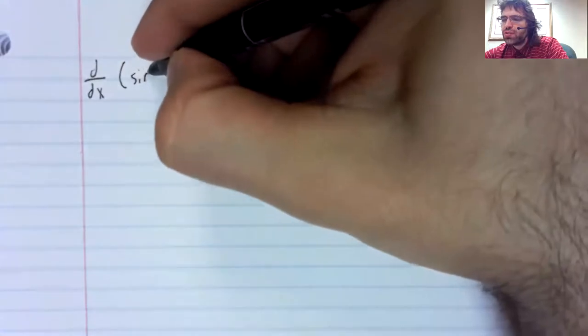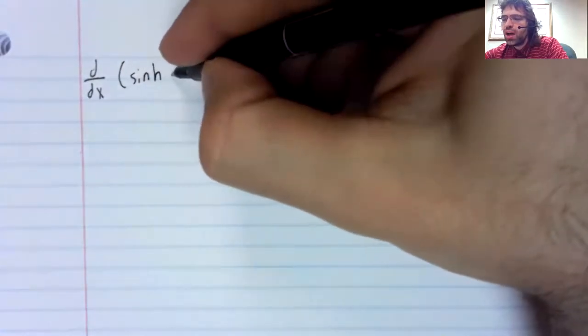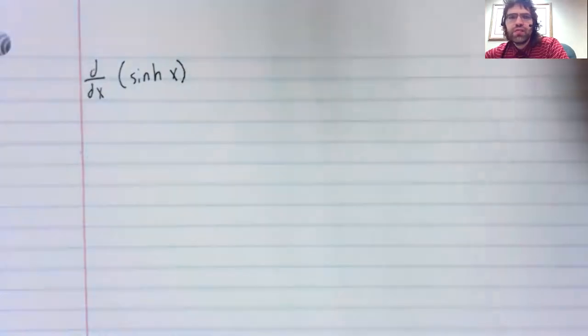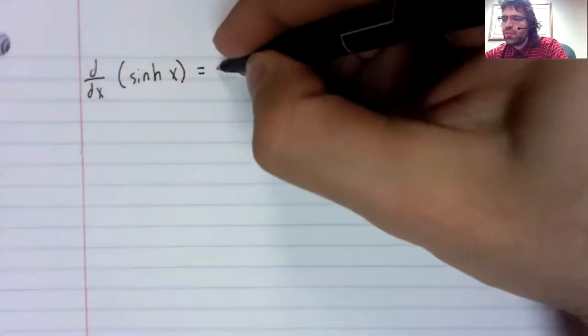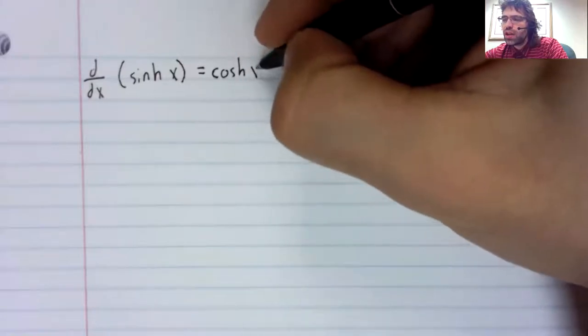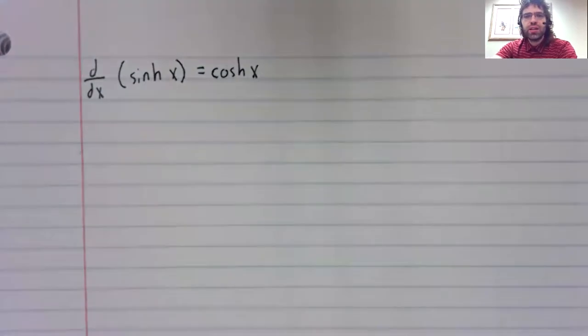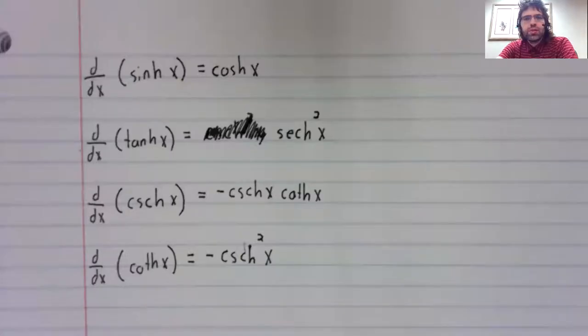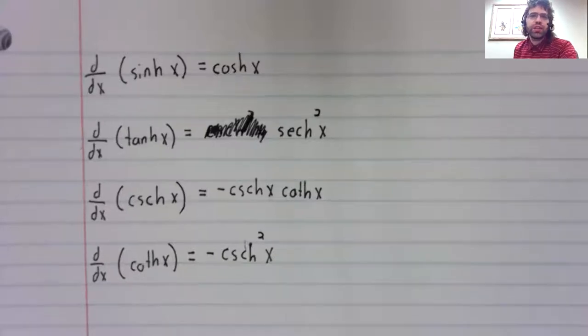The derivative of the sine is the cosine. The derivative of the hyperbolic sine is the hyperbolic cosine. Similarly, for the tangent, cosecant, and cotangent, you take the derivative formed of those you already know. And everywhere a trig function appears, you replace it with a hyperbolic trig function.